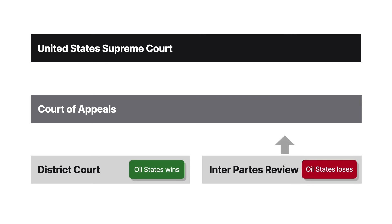Oil States appealed the board's decision to the Federal Circuit, contending that the inter-partes review was unconstitutional and that an action for patent revocation was to be addressed by federal courts only. Before the Federal Circuit tried the appeal, it heard another case with the same constitutional challenges and summarily affirmed the board's decision in the Oil States matter as a result. The Supreme Court agreed to review the case.